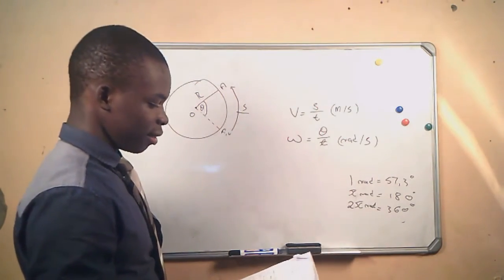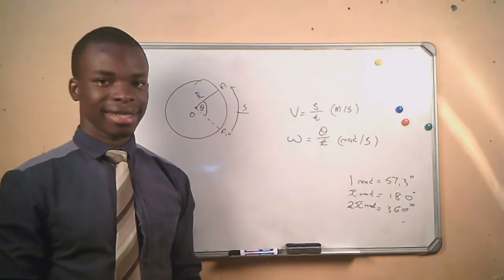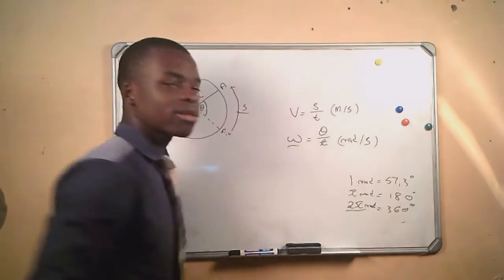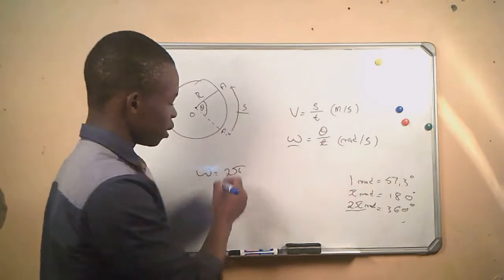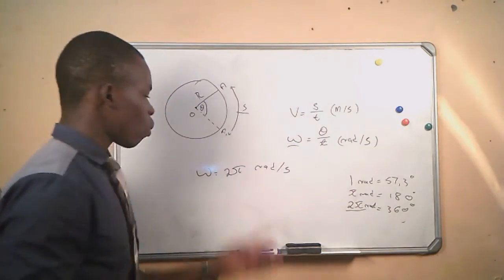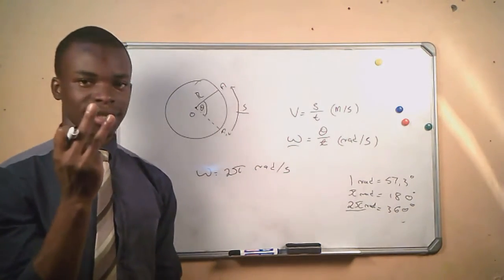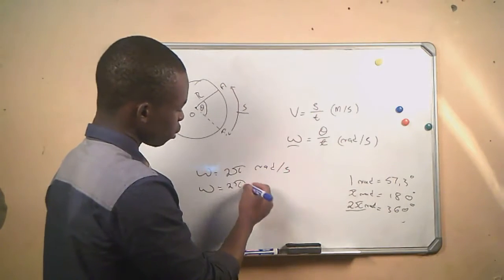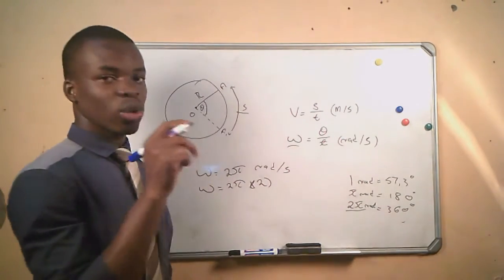For example: if radius OA completes one revolution in one second, the angular velocity will be 2π radians per second, since one revolution equals 2π. If OA makes two revolutions in one second, the angular velocity will be 2π times 2, giving 4π radians per second, because those two revolutions are made in one second.